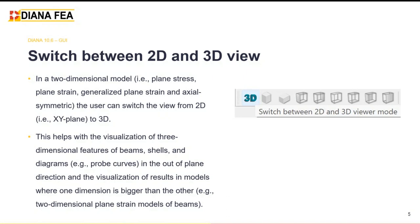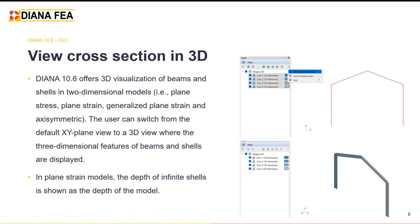This is also valuable when the 2D model is very elongated, such as a plane strain model of a very elongated beam, and the user wants to display a probe curve diagram orthogonal to the XY plane. For instance, when modeling a frame structure with beams, in the 2D view these appear as simple one-dimensional lines. But with one click the user can move to a 3D view and see the full 3D geometry of the beams — including cross-section features — helping to verify the orientation of the beam axis and confirm that cross-section inputs are correct.